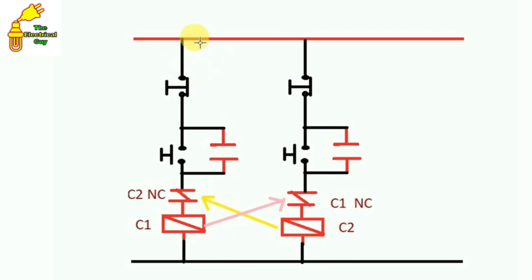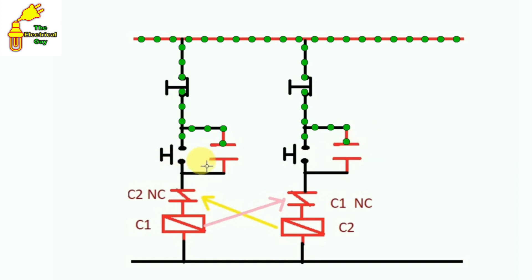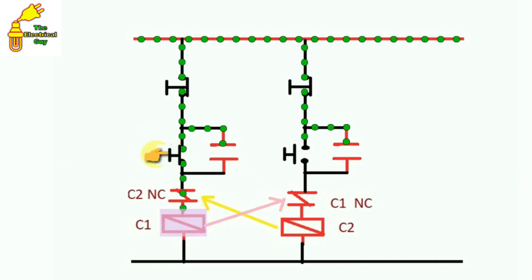Now what is the benefit of this? In the off condition, power supply will remain till here; similarly current comes from here and remains till here. But from here power supply is not moving further because it is open. In normal condition it is open at four places — here, here, here, and here — and due to this openness at all four places, power supply cannot flow further. This is why the contactor is not turning on.